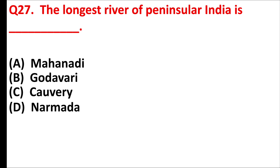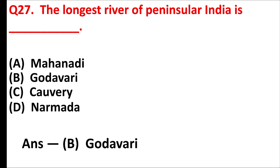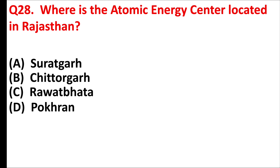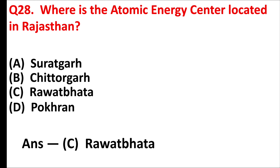The longest river of Peninsular India is — answer is option B: Godavari. Where is the atomic energy center located in Rajasthan? Answer is option C: Rawatbhata.